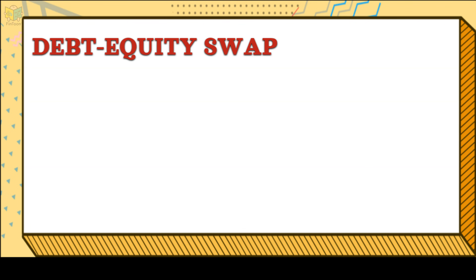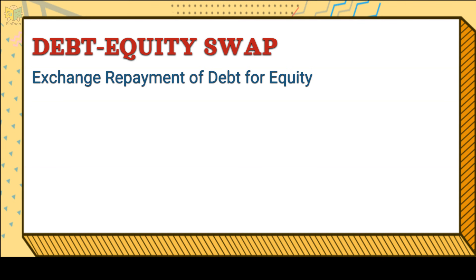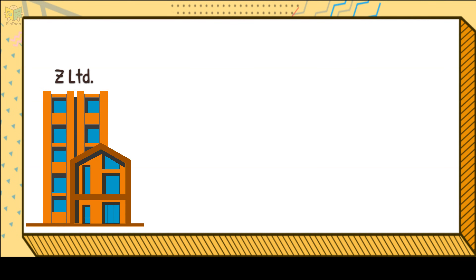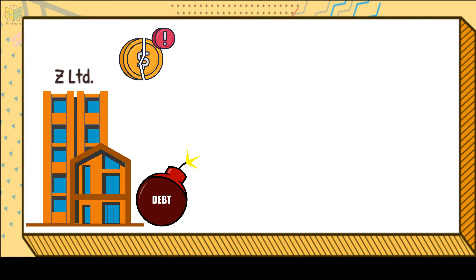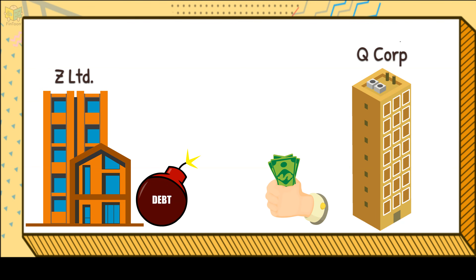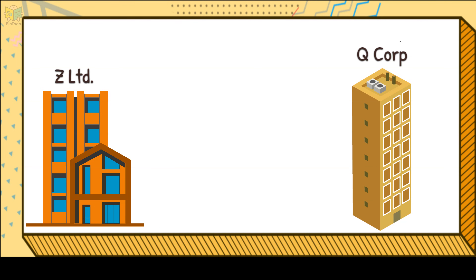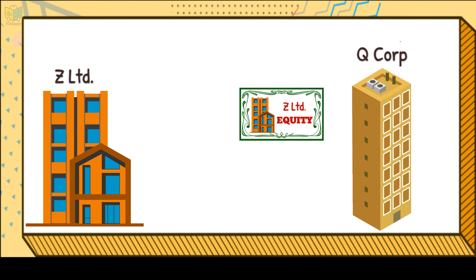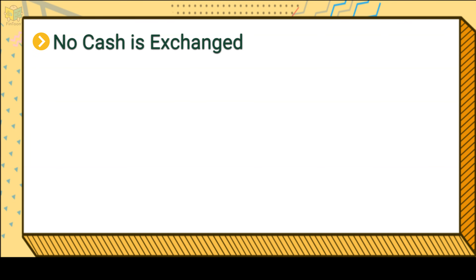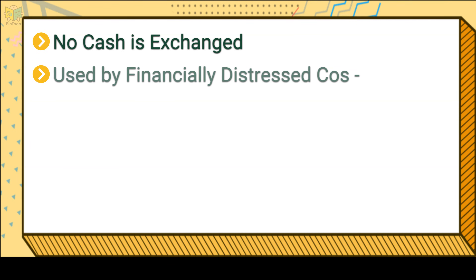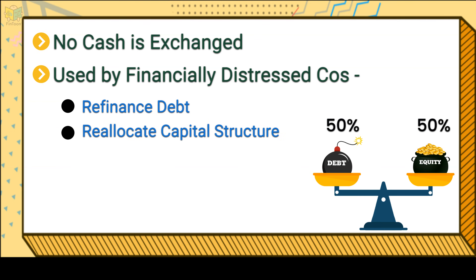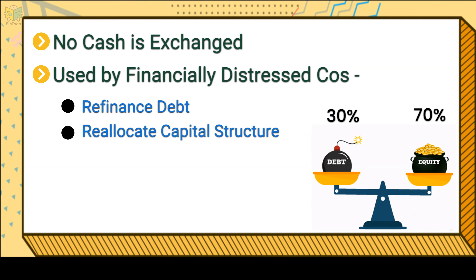Debt Equity Swaps: A debt equity swap involves exchanging repayment of debt for equity. Suppose Z-Limited has a $5 million debt. Due to financial distress, it is unable to make the interest and principal repayments. Q-Corp is willing to repay the debt directly in return for a 30% equity ownership of Z-Limited. No cash is paid to the counterparty in this swap. It is used by financially distressed companies to refinance their debt or reallocate their capital structure and keep it within a target range.